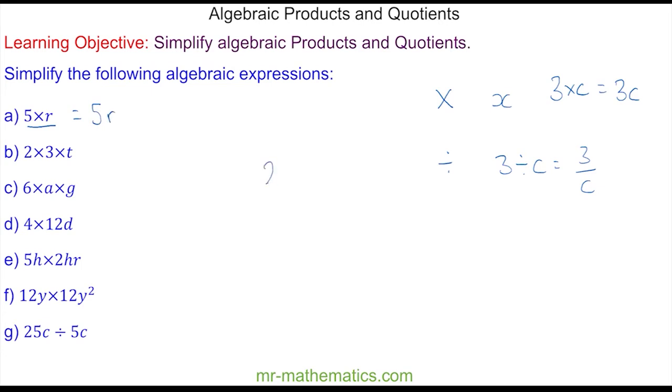In question b, we have 2 times 3 times t. We do this multiplication which is 2 times 3 to make 6. And we don't include this times, we just write 6t. So this simplifies to make 6t.